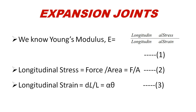Stress is F by A. Longitudinal strain is the lengthwise increase — that is, change in length divided by original length. Longitudinal strain equals DL by L, which is equal to alpha times theta, where alpha is the thermal expansion coefficient and theta is the temperature change. So DL by L equals alpha·theta.